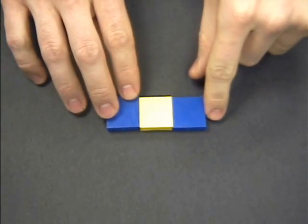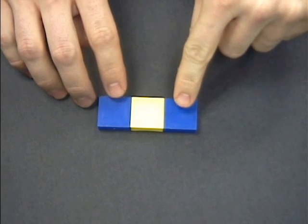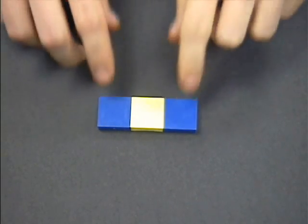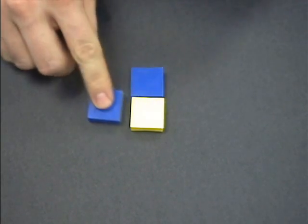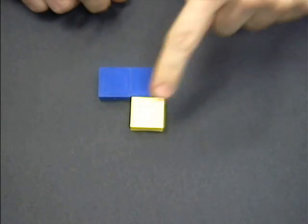Is 3 prime? I can make this array to show the factors of 3: 1 and 3. But I can't make another rectangle that's different. So 3 must be prime.